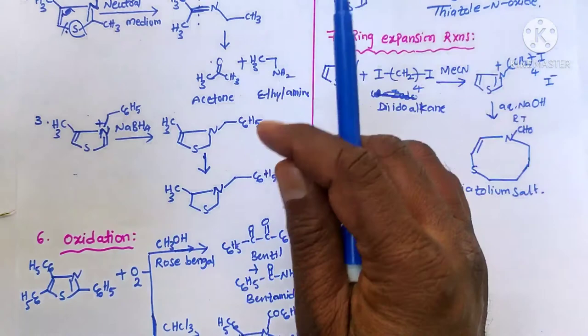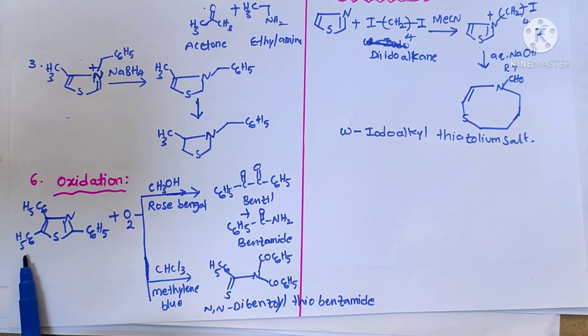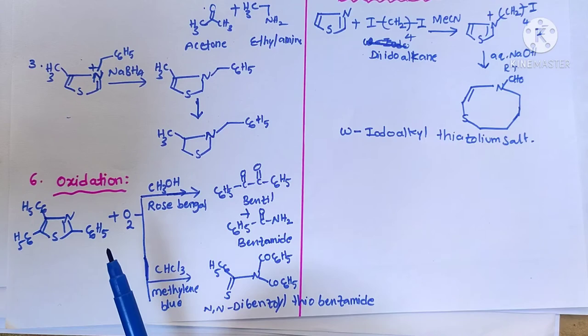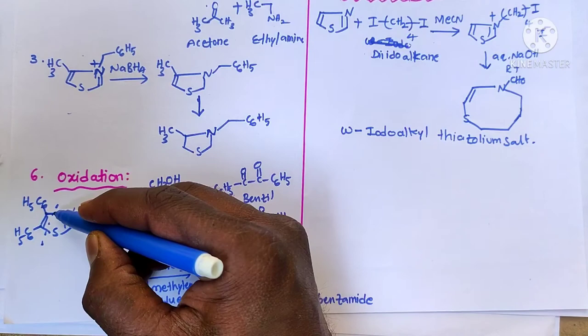Now we go for the oxidation reactions. When 2,4,6-triphenyl thiazole is treated with oxygen in methanol with Rose Bengal as sensitizer, we get benzil and benzamide derivatives — from one part we get benzil and from the other part we get benzamide.